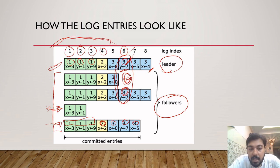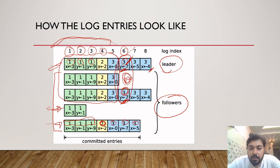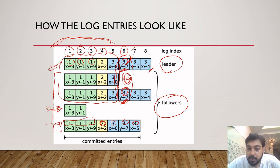If two nodes are in sync for a current index and term, then they will be in sync for all the preceding index and term entries as well. This is a key property that the Raft algorithm establishes.